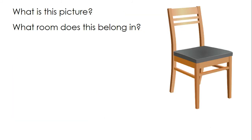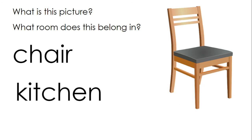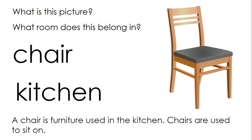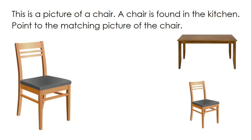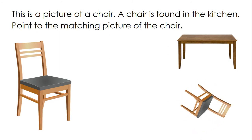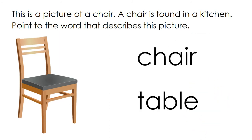What is this picture? This is a chair. What room does this belong in? It belongs in the kitchen. A chair is furniture used in the kitchen. Chairs are used to sit on. This is a picture of a chair. A chair is found in the kitchen. Point to the matching picture of the chair. Great, you made the match. Point to the word that describes this picture. Chair.